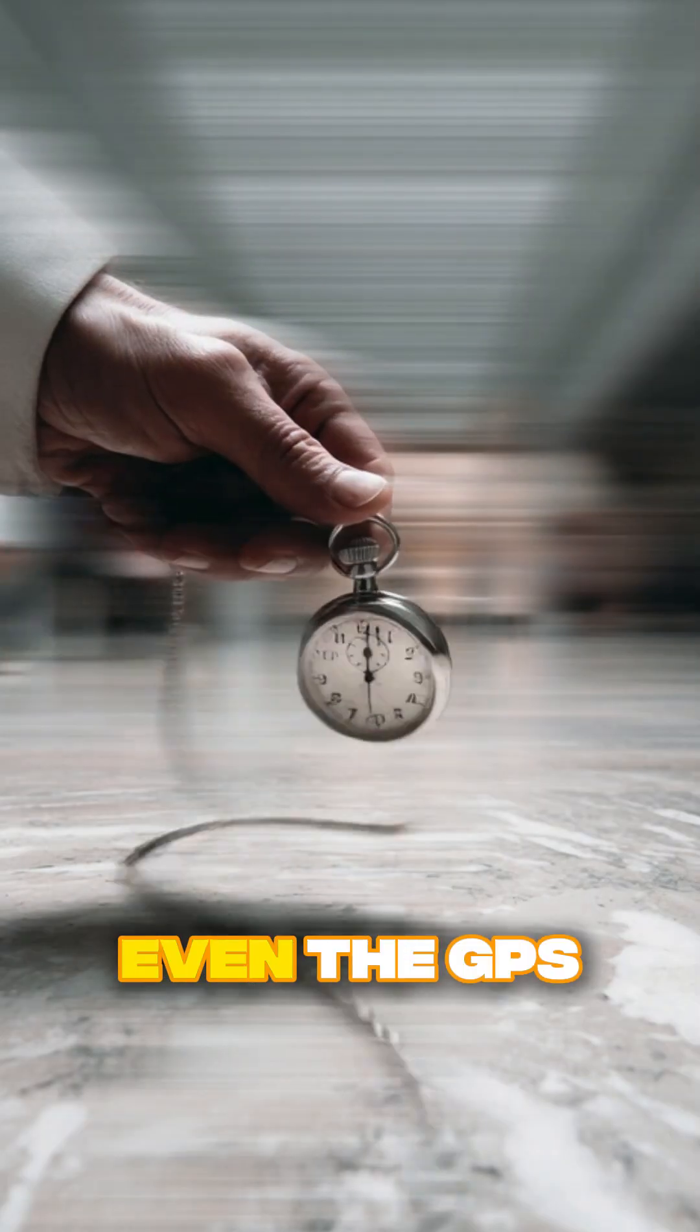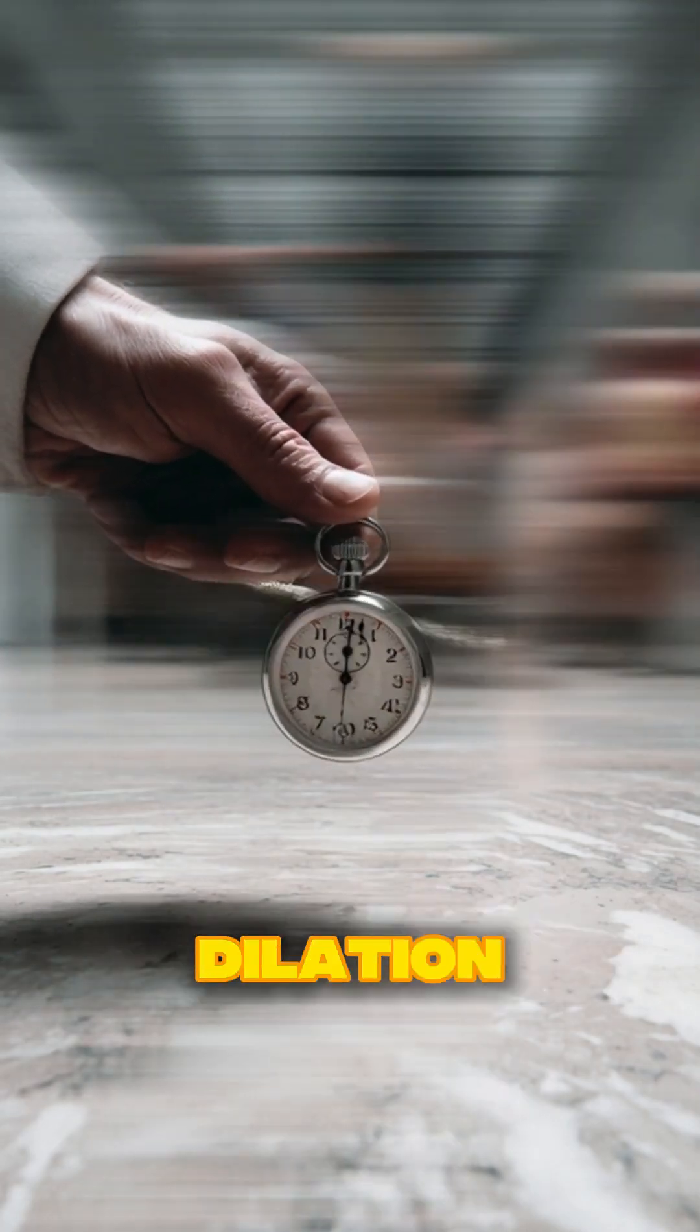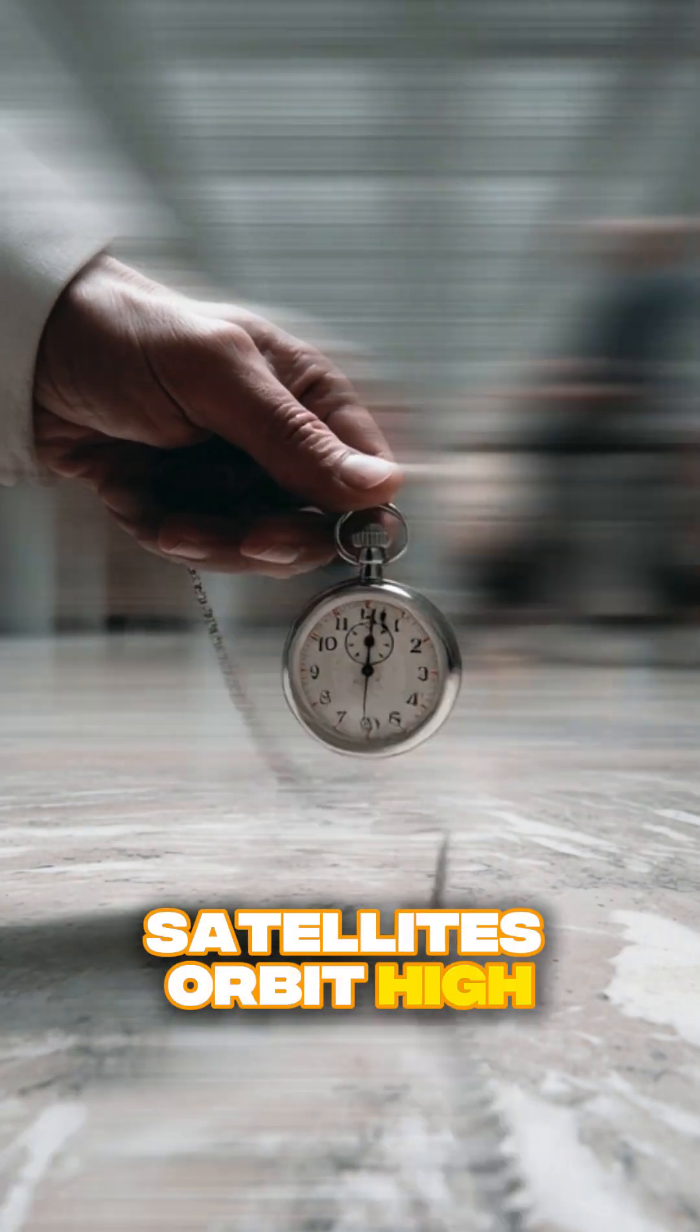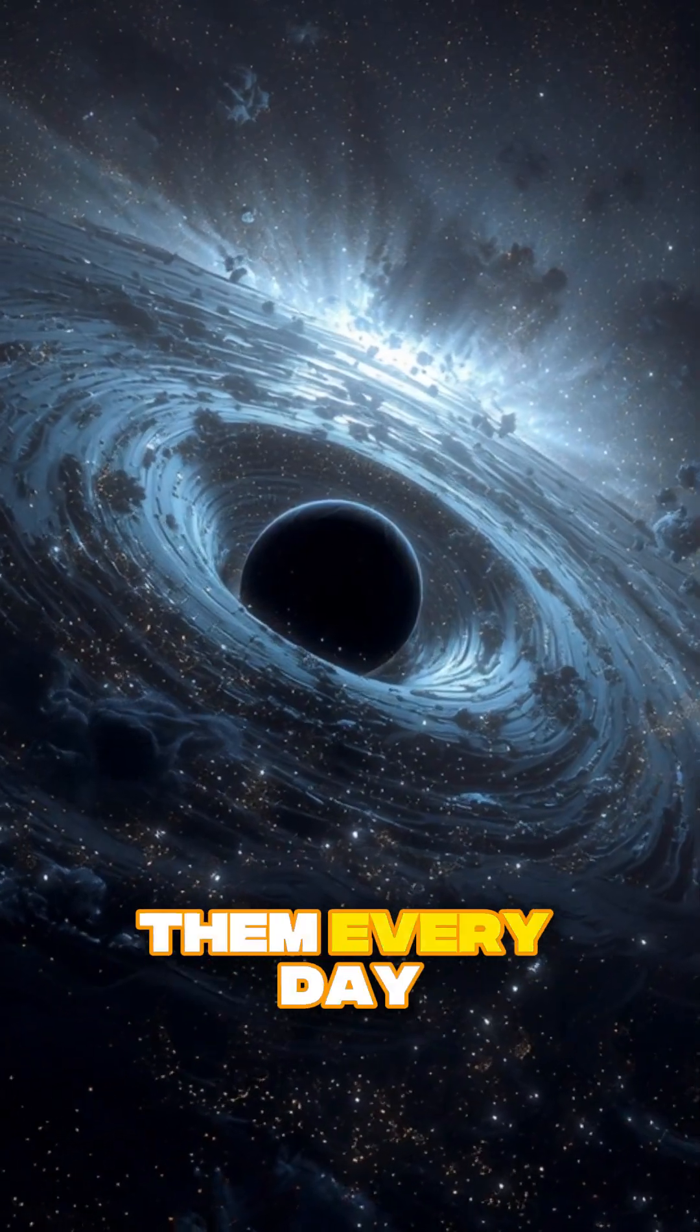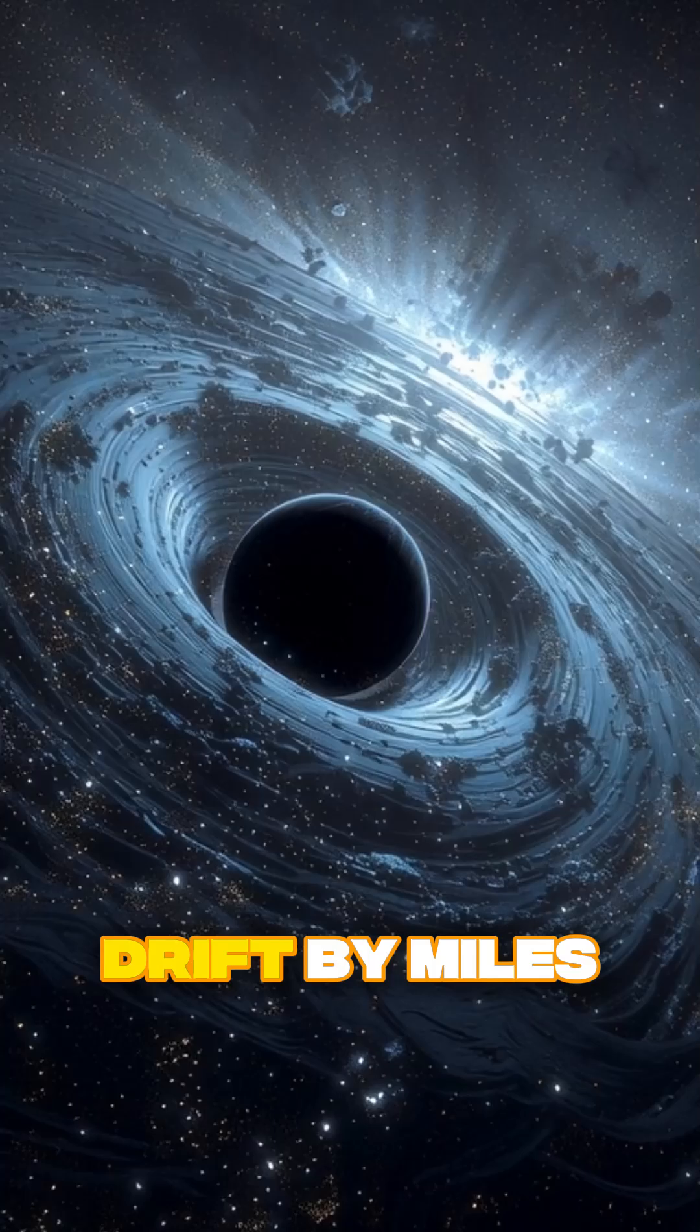And here's the crazy part. Even the GPS on your phone depends on time dilation. Satellites orbit high above Earth where gravity is weaker, so their clocks tick faster. Engineers must adjust them every day or GPS would drift by miles.